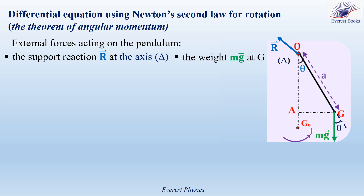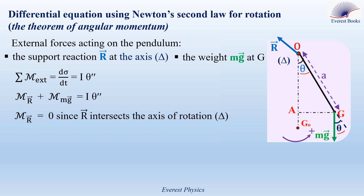The weight is parallel to OG0, so these two angles are corresponding angles. Therefore, the angle between the weight and OG is equal to theta. Applying Newton's second law in rotation: the sum of the moments of external forces acting on the pendulum equals the time derivative of the angular momentum about delta. Since the moment of inertia I is constant, d-sigma by dt equals I theta-double-prime, where theta-double-prime is the angular acceleration. So the moment of R plus the moment of weight Mg equals I theta-double-prime. The moment of R is zero since R intersects the axis of rotation delta. The moment of the weight equals minus MgA sin theta — minus because the weight tends to return the pendulum to its equilibrium position: for theta positive the moment is negative, and for theta negative the moment is positive.